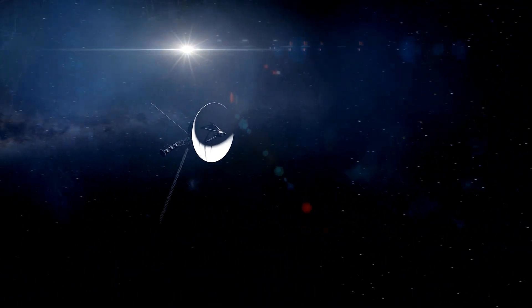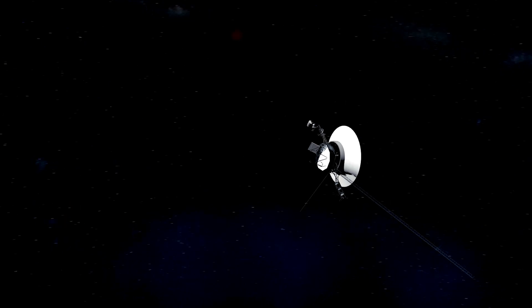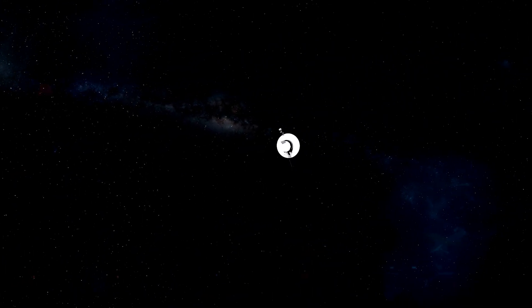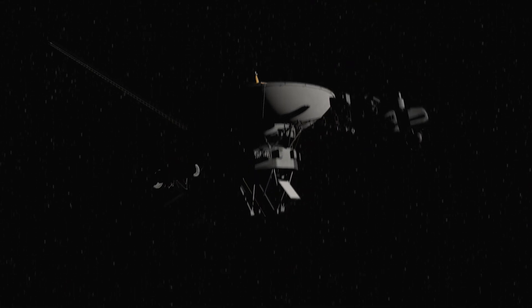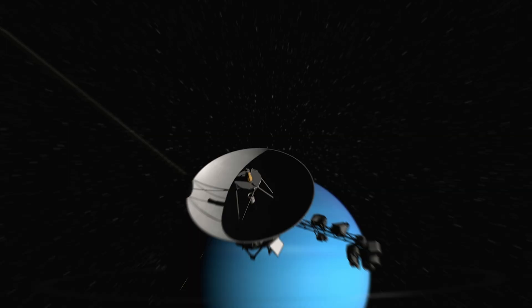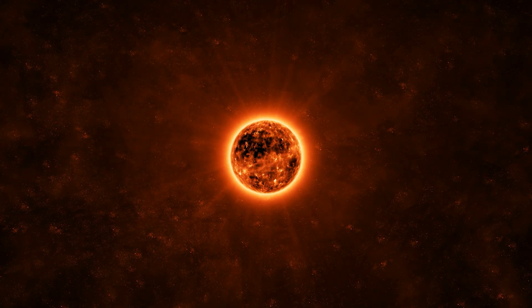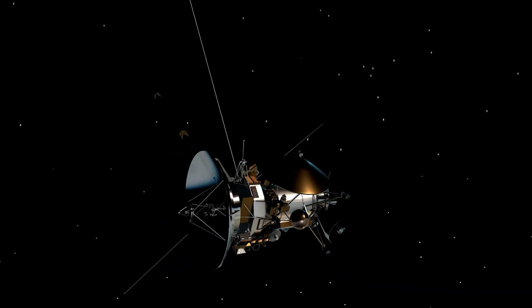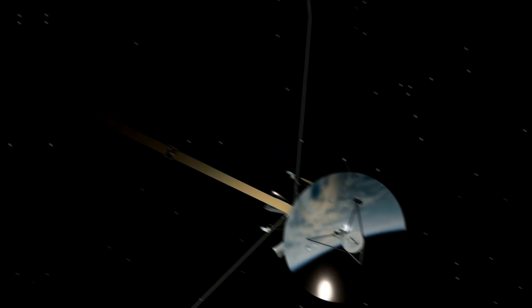After its planetary tour, Voyager 1 continued speeding away from Earth at 61,000 kilometers per hour, heading into the unknown. In 2012, it became the first human-made object to enter interstellar space, the region beyond the Sun's influence, where solar winds give way to the galactic medium.